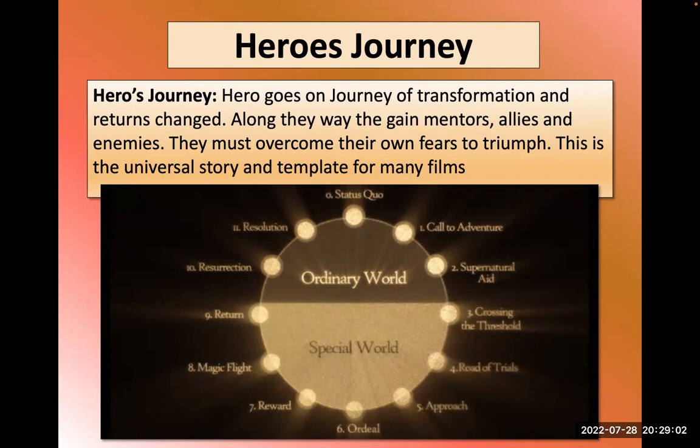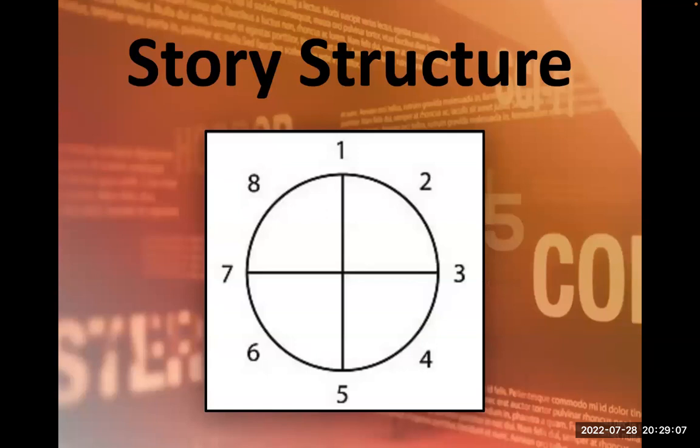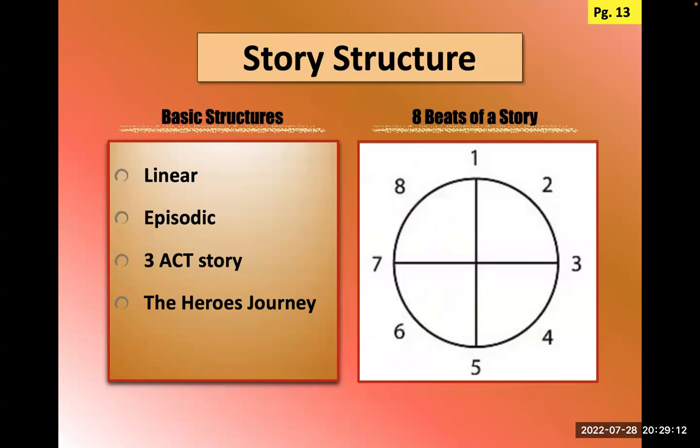The hero's journey is the ultimate basic storyline. Most coming-of-age films are actually a hero's journey, where the hero goes on a journey into their unconscious — into the special world — and returns changed. Stories have about eight beats in them as a basic way to organize them. We also have linear, episodic, and three-act story structures. A film can use the hero's journey, have a three-act story structure, and be linear — they overlap and are often used in combination.